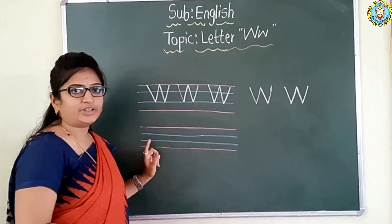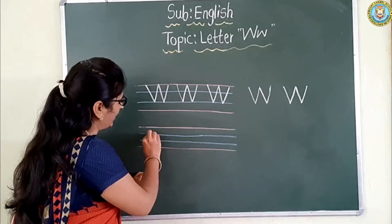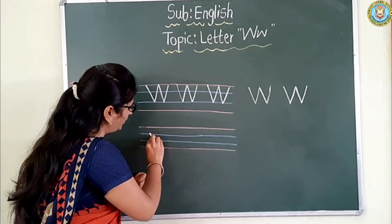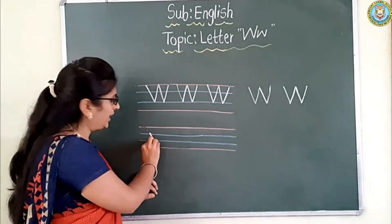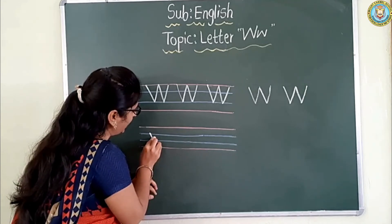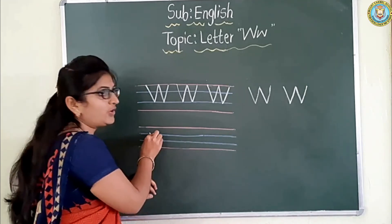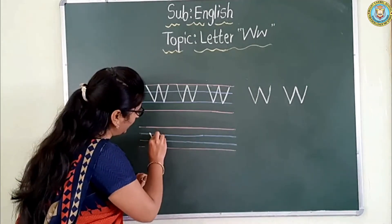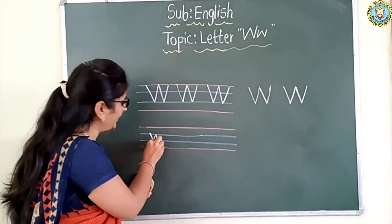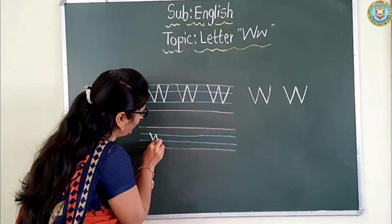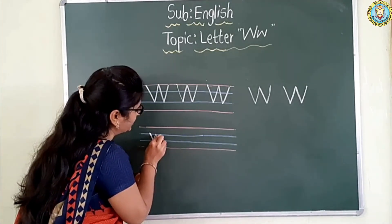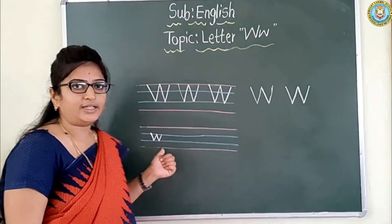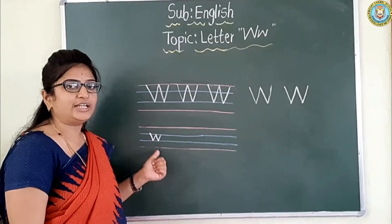Now I will teach you how to write small W in four lines. See here — for small W we use two blue lines. First you start from the first blue line. Write the slanting line and come down to touch the second blue line.